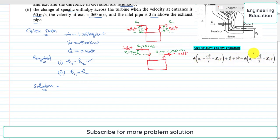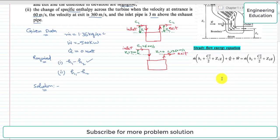This is the steady flow energy equation, where m-dot is the mass flow rate of the steam, h1 is the specific enthalpy at the inlet of the turbine, c1 is the velocity at the inlet, z1 is the elevation of the inlet pipe from the reference line, Q-dot is the heat transfer, W-dot is the power output, h2 is the specific enthalpy at the exit, c2 is the velocity at exit, and z2 is the elevation at the exit pipe.